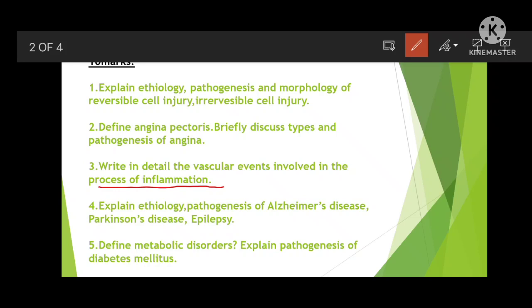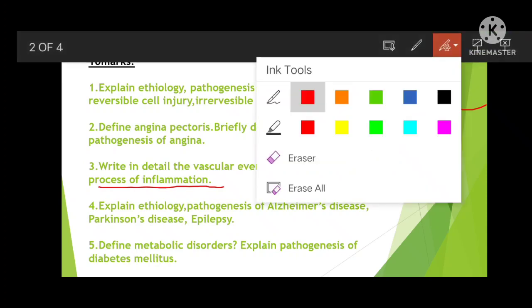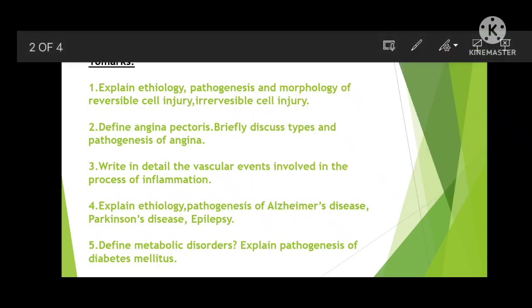Next: describe the vascular events involved in the process of inflammation. First write what inflammation is, then types — acute and chronic inflammation — then the mechanism of inflammation, after that the vascular events. Also write which chemical mediators are present during inflammation, such as nitric oxide, hydrogen peroxide, and free radicals.